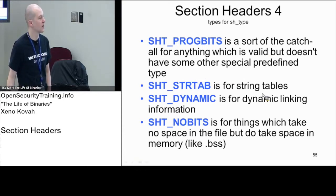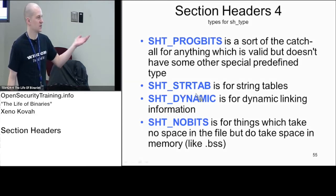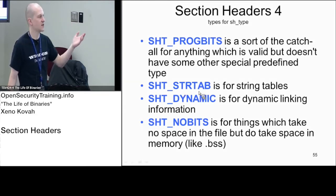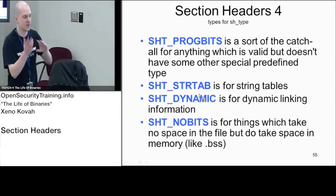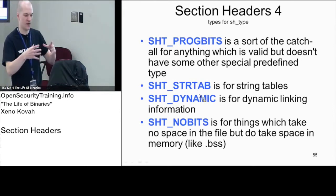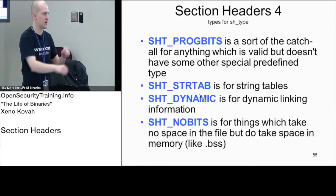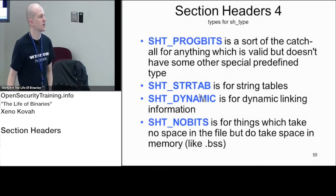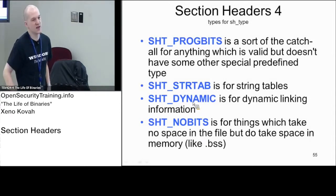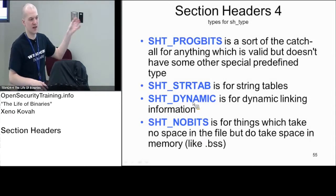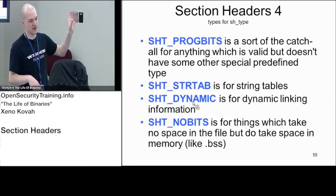The string table section must have a type of STRTAB. That has to match up so that when the ELF header points at a particular entry it better have a string table type. DYNAMIC is another type — we already saw dynamic up at the program header level. You don't need section headers to run; the dynamic linker only needs to depend on the program headers.